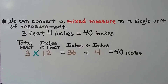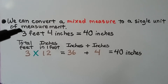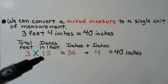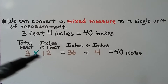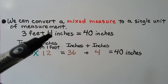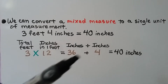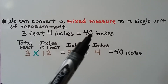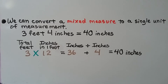We can also convert a mixed measure to a single unit of measurement. We have 3 feet 4 inches. We take the 3 feet times 12 inches in one foot, which equals 36 inches. Then we add the 4 inches and get 40 inches. So 3 feet 4 inches is equal to 40 inches.